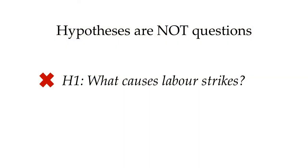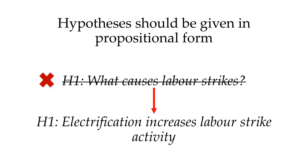Hypotheses need to be focused and get straight to the point so that your readers understand precisely what you're asserting. Also, remember that hypotheses are not the same thing as research questions. They're potential answers to those questions, so don't confuse the two. You don't want a hypothesis with a question mark at the end, like 'What causes labour strikes?' Instead, give your expectation in propositional form — that is, as a single clear grammatical sentence. For instance: 'electrification increases labour strike activity.' Clear hypotheses are snappy, specific, concrete, and written out in propositional form. Your reader should be in no doubt about the nature of the relationship you're asserting between particular variables or explanatory conditions.